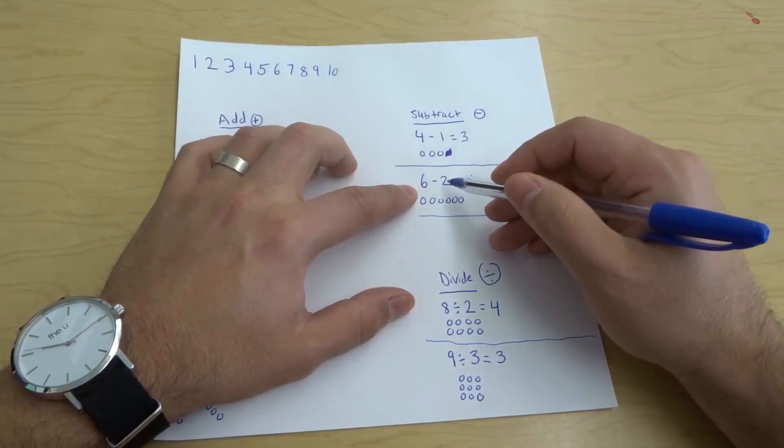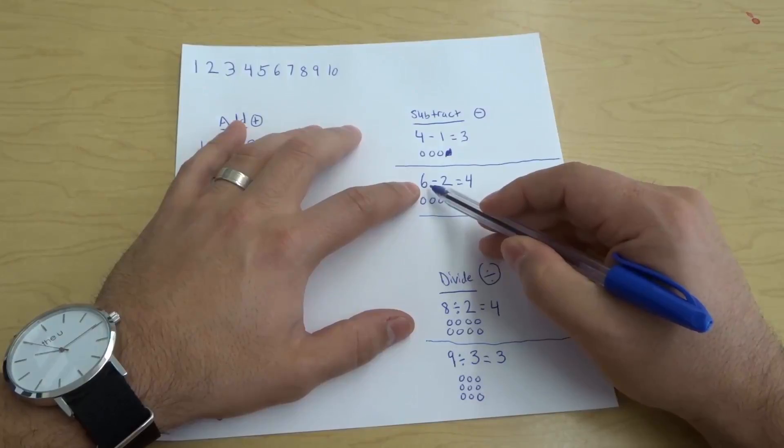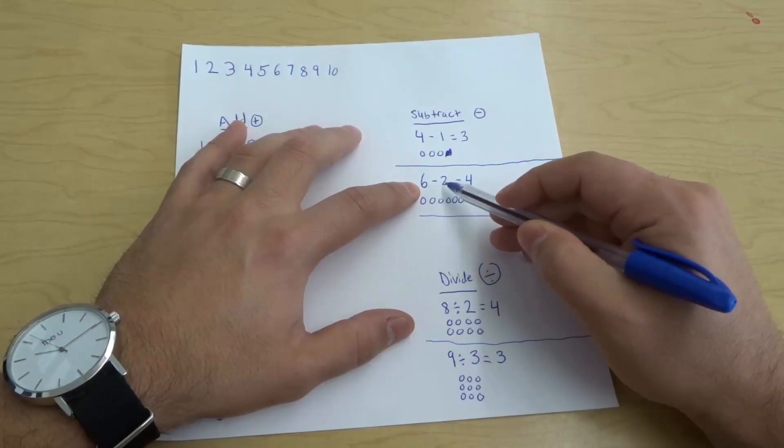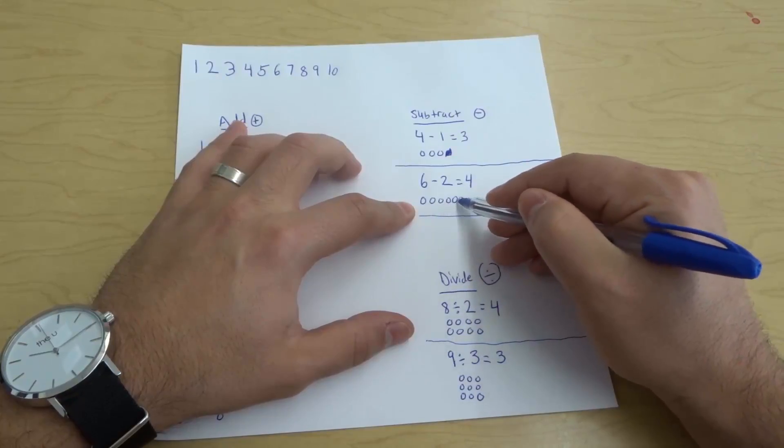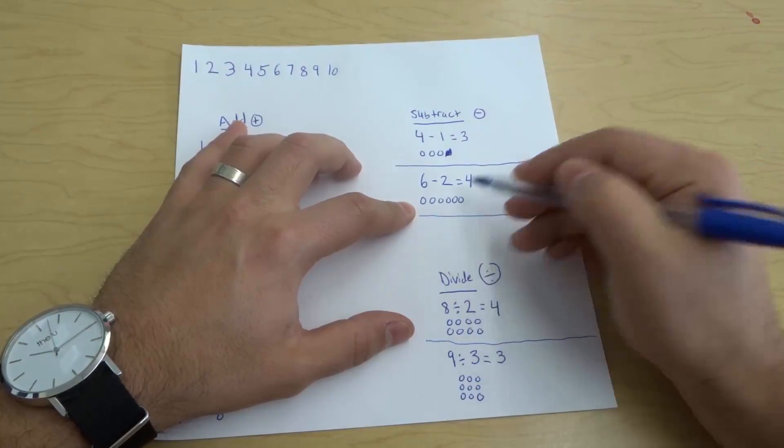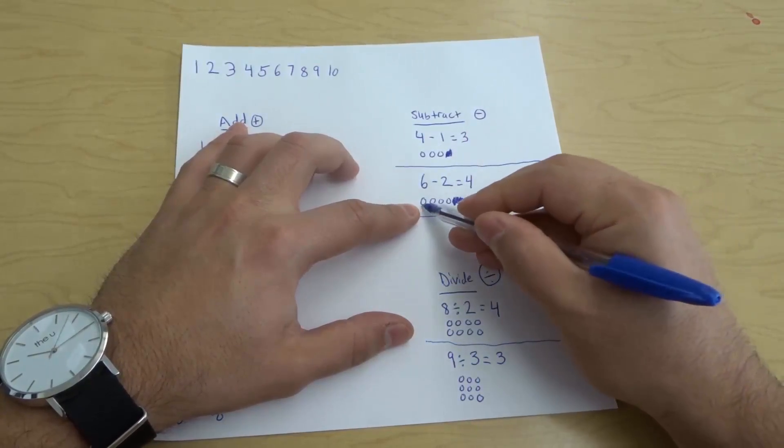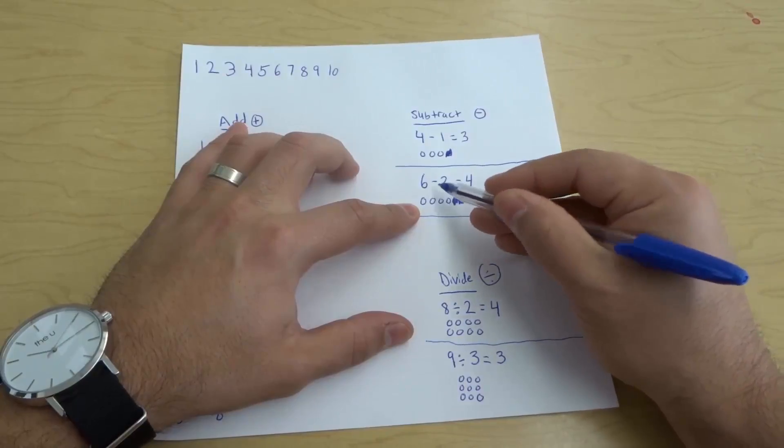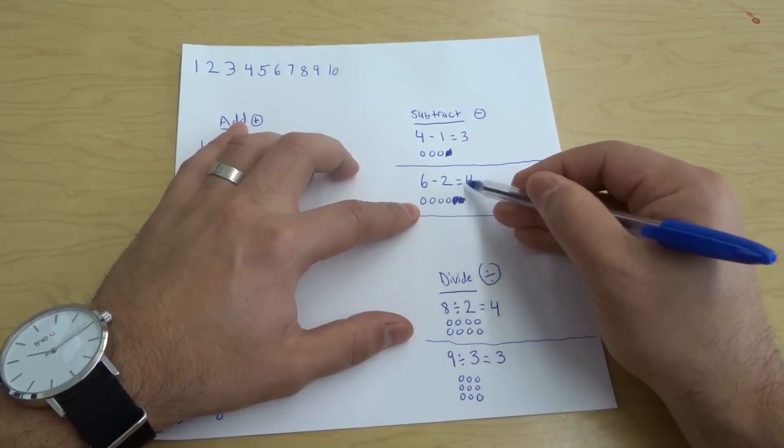Now we have another one over here: 6 subtract 2, 6 minus 2. So we start off with 6: 1, 2, 3, 4, 5, 6. We're going to take away 2 of them. So we're going to take away 1, 2. And what we're left with is 4: 1, 2, 3, 4. 6 minus 2 equals 4.